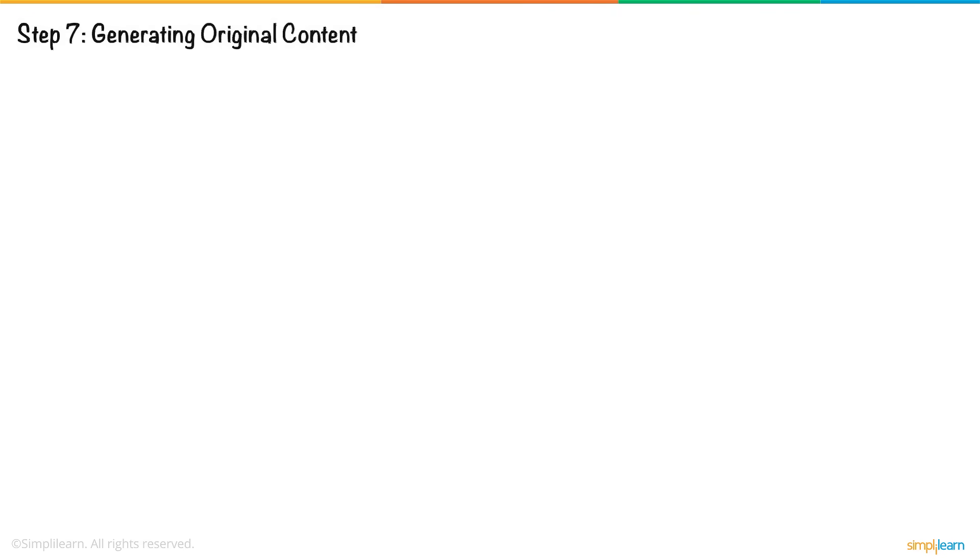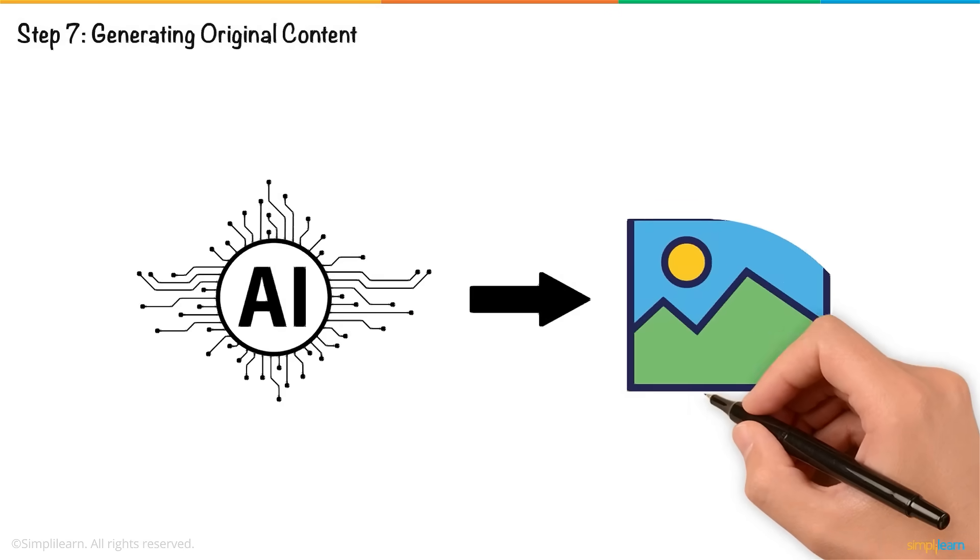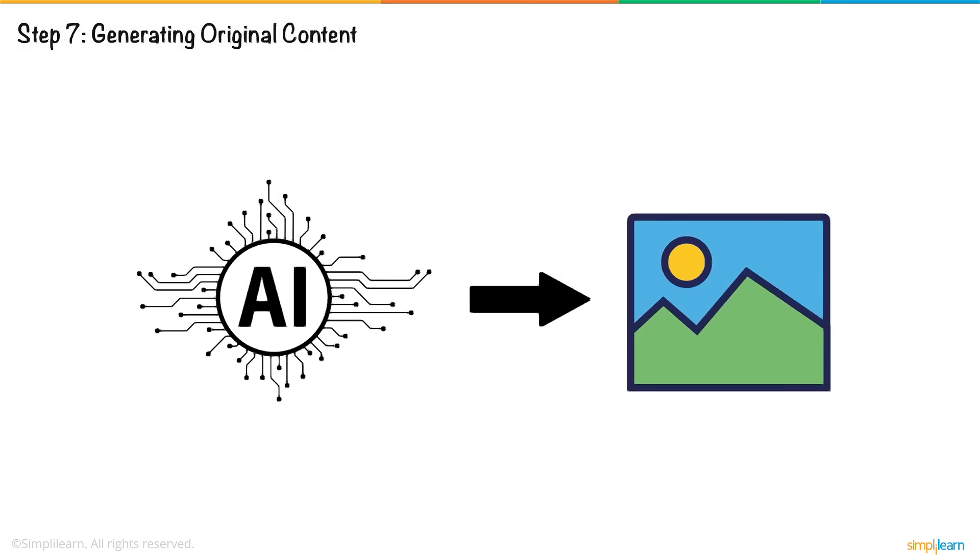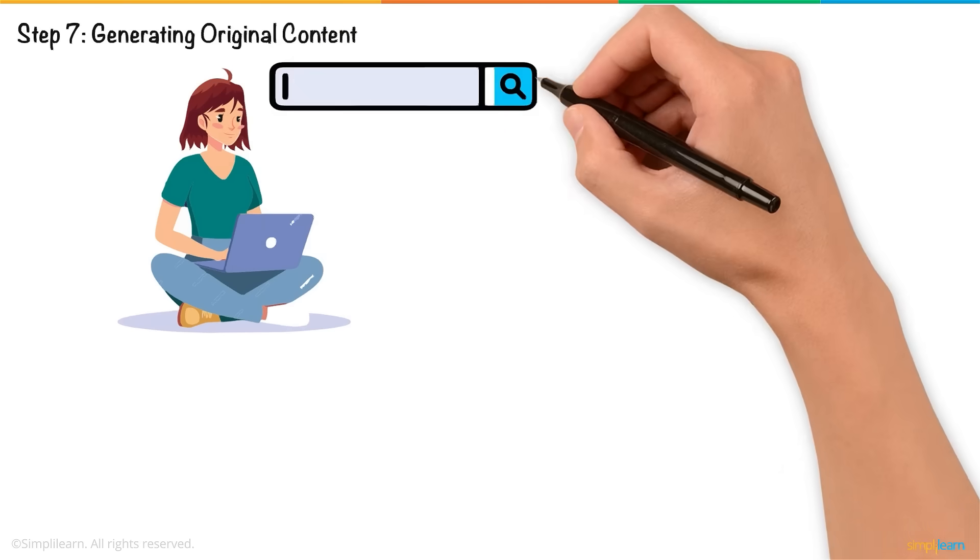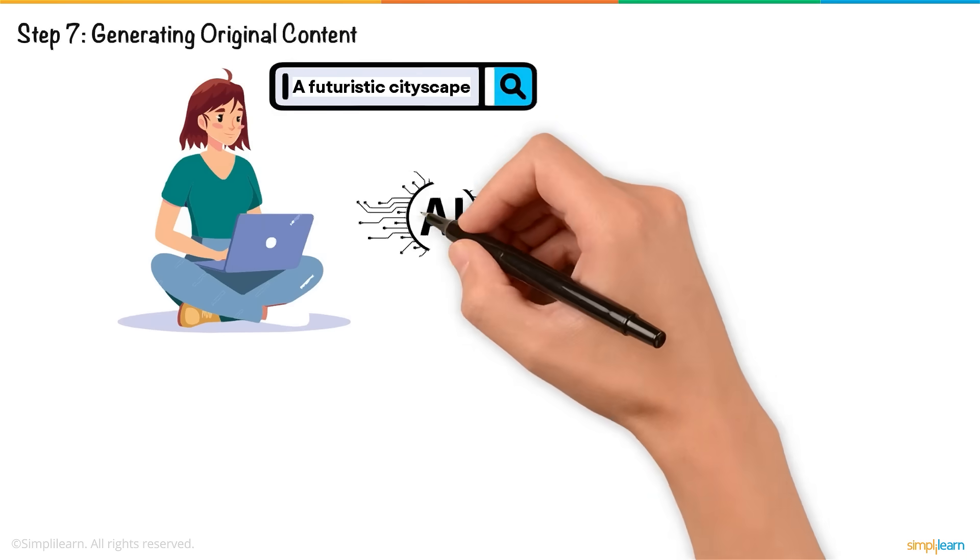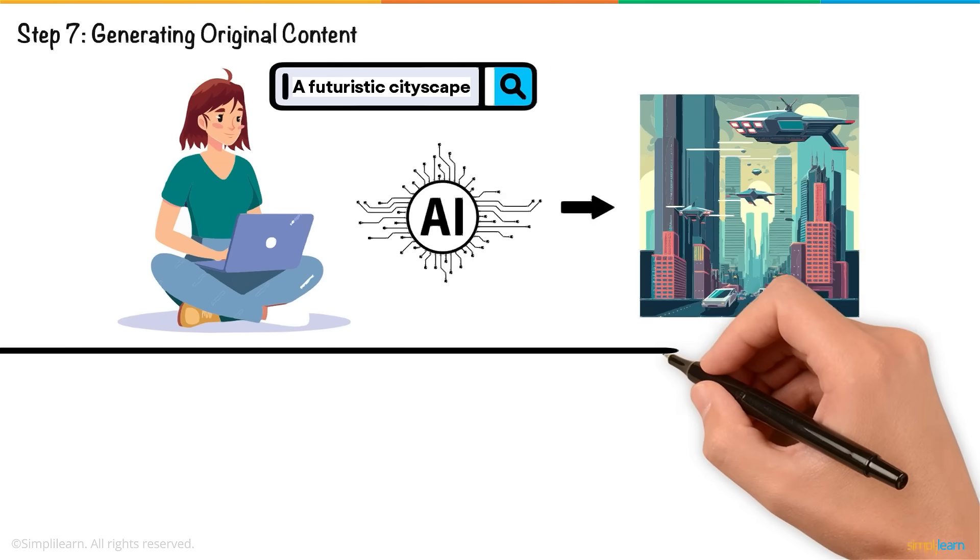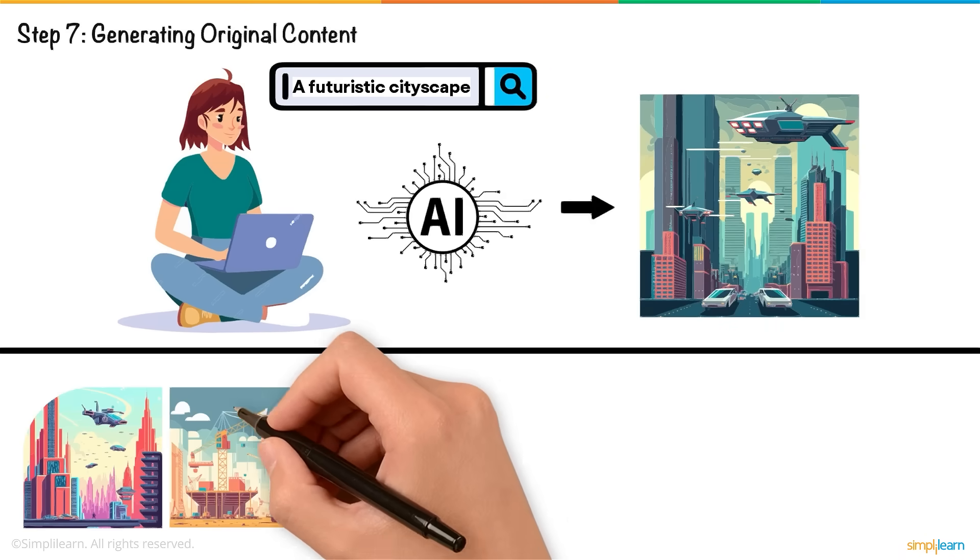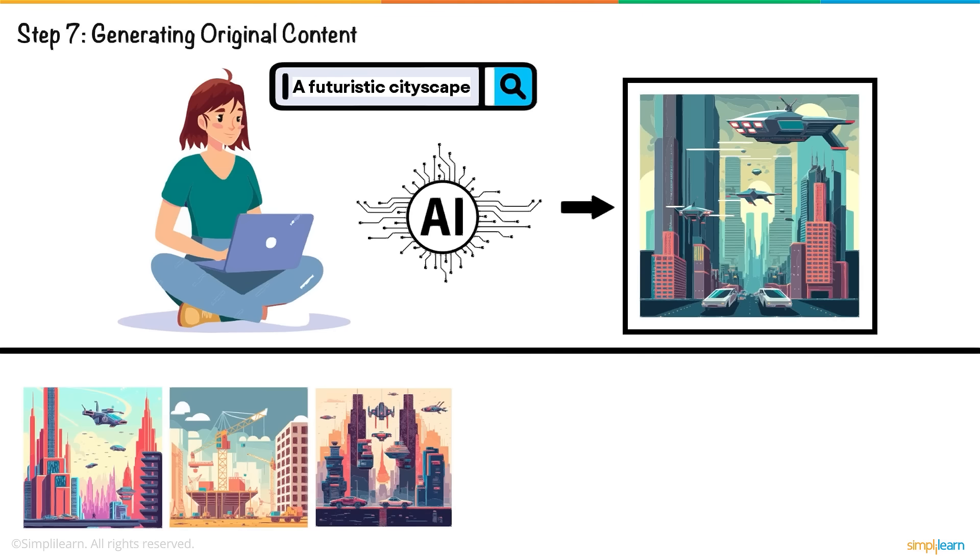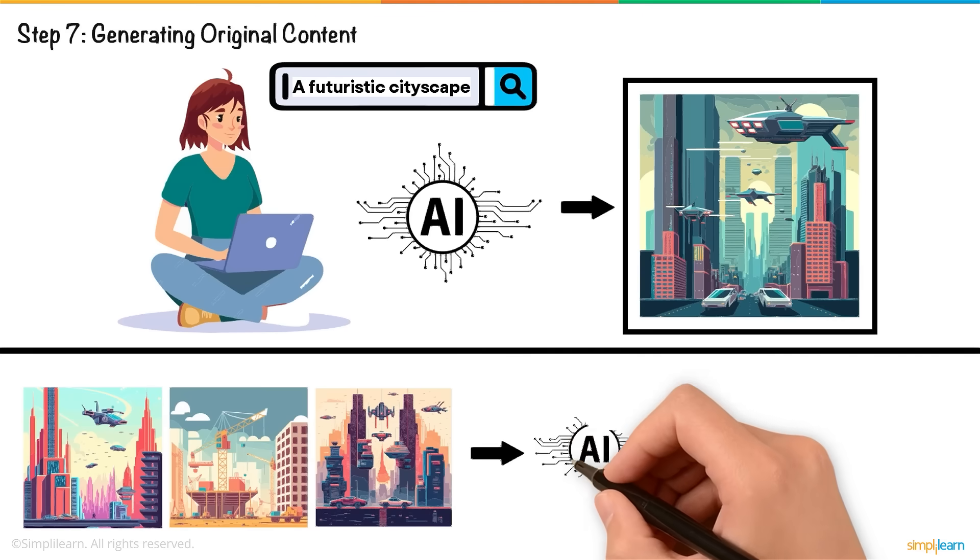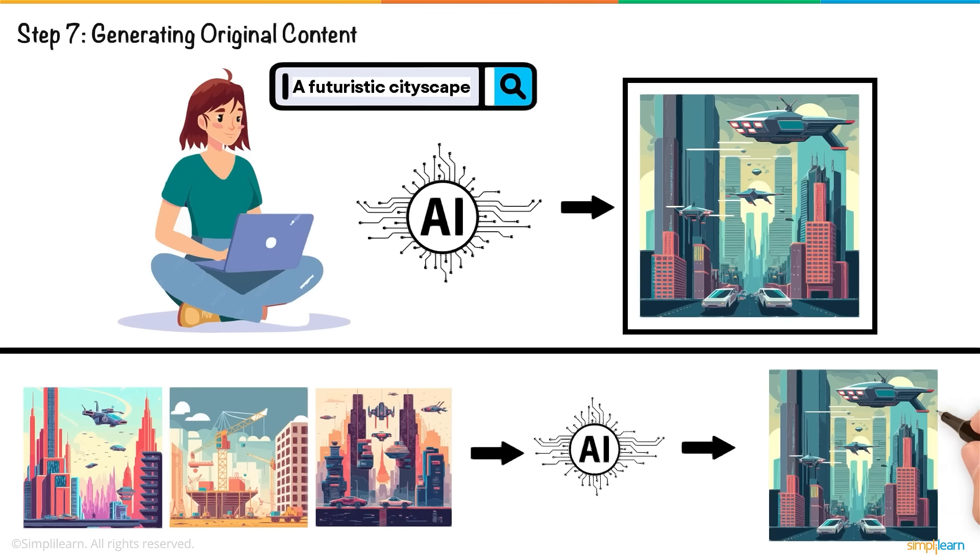Generating Original Content: Once trained, the model can generate original images. For example, Emma might describe a futuristic cityscape, and the AI would produce a unique image based on what it learned. The generated image isn't just a copy of past data, but an entirely new creation, showcasing the AI's ability to combine learned patterns and creativity.